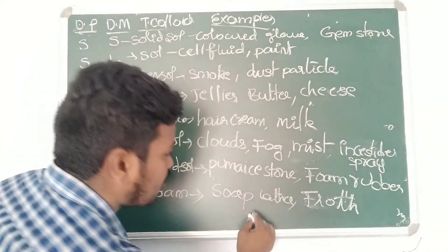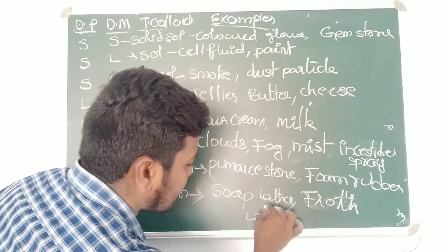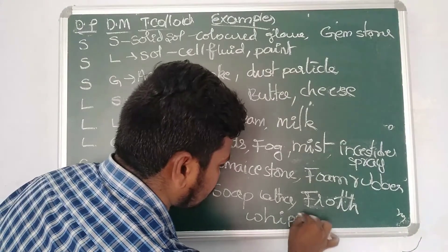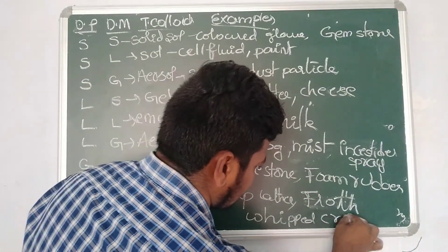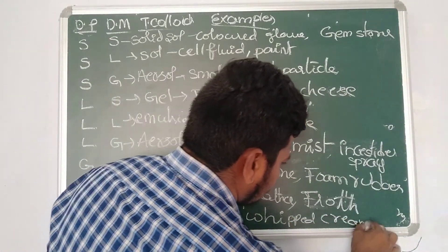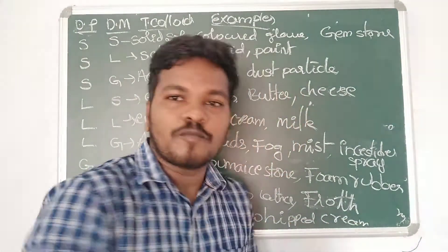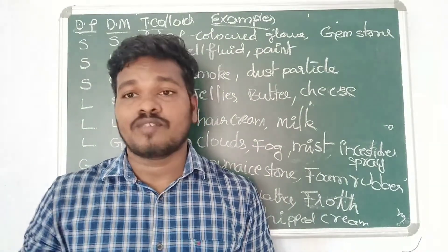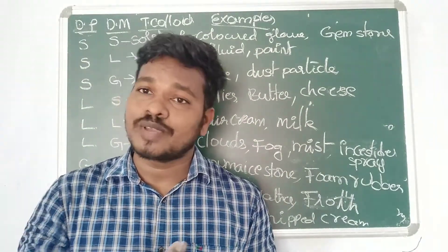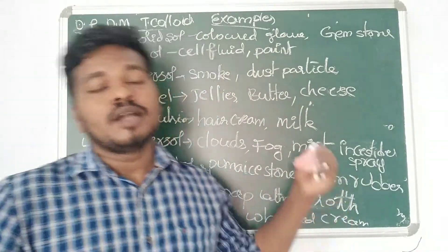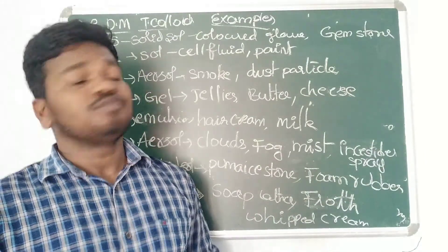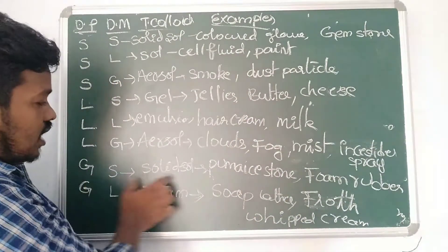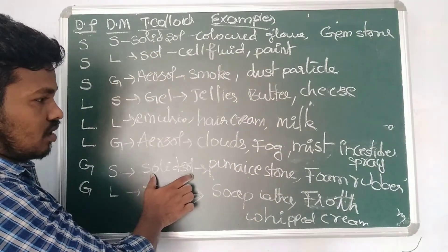He winds up everything — 'wind up' in the sense you can write 'whipped cream.' So the final example is whipped cream. This is a very funny, tricky story. Once you practice it three or four times, you can automatically remember the types of colloid and their examples.